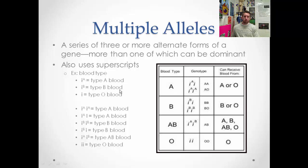There are three different alleles — that's why it's called multiple alleles. How do you get type A blood? You could be I^A I^A or I^A little i. How do you get type B? You can be I^B I^B or I^B little i. How do you get AB? You'd be I^A I^B. How do you get type O? That's recessive — little i, little i. Three alleles total for this gene.